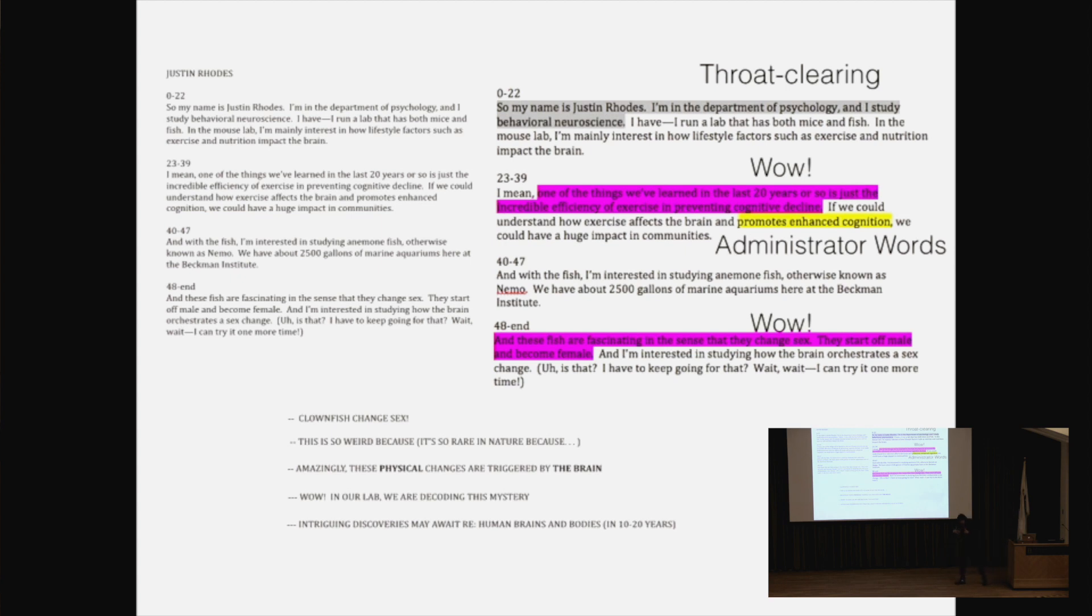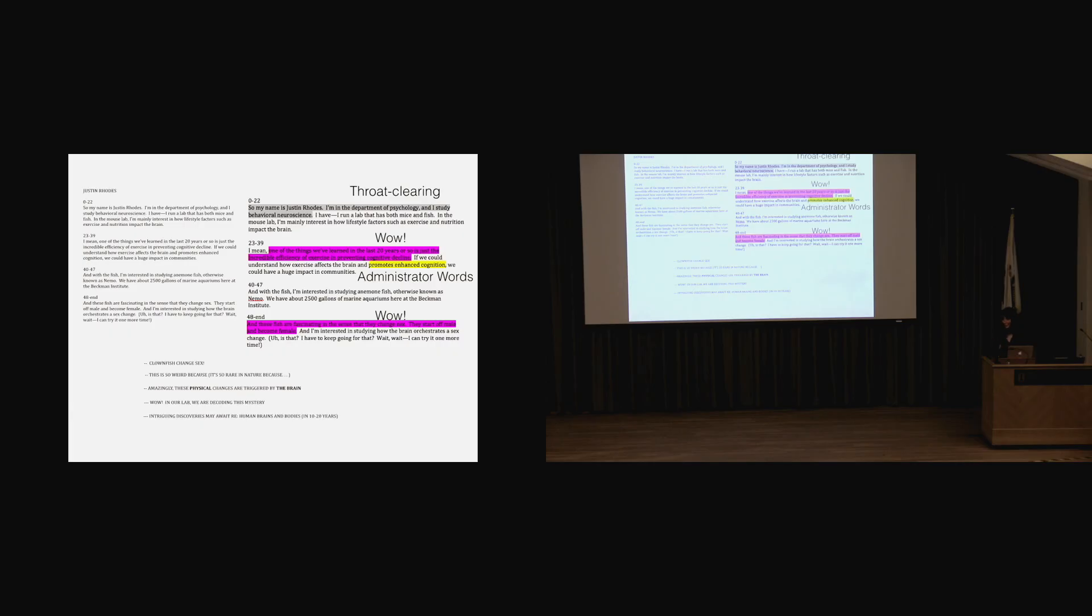Amazingly, these physical changes are triggered by the brain. What? That's something you might not think of. Some chemical makes your body physically change. Something in your brain that makes you sprout an organ? Wow! We're decoding this mystery! That's really cool! If this is an animal that does this, then there's something about humans that we'll find out in 10 to 15 years.